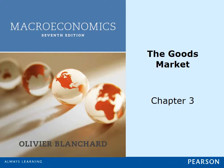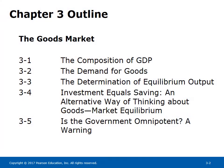In this chapter, we focus on understanding the key components of demand and the interactions among production, income, and demand. Chapter 3 covers: The Composition of GDP, The Demand for Goods, The Determination of Equilibrium Output, Investment Equals Saving as an alternative way of thinking about goods market equilibrium, and a warning about whether the government is omnipotent.